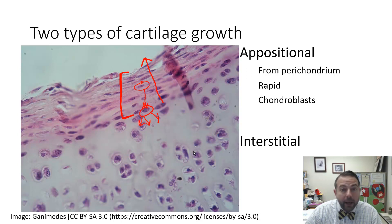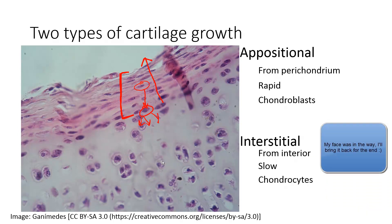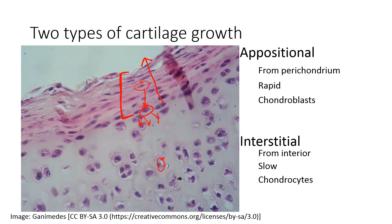Interstitial growth occurs lower down in the cartilage, coming from the interior, and it is much slower because it's carried out by chondrocytes. Even though a chondrocyte is completely surrounded by matrix and getting nutrients in and waste out is difficult, it is still very slowly able to secrete small amounts of matrix. These cells will eventually grow enough to undergo mitosis — one parent cell divides into two daughter cells. Where cell division has taken place twice in the same lacuna, we call these groups of daughter cells — these clones from a single parent cell — isogenous groups. 'Iso' meaning same, 'geno' meaning beginning: coming from the same beginning.